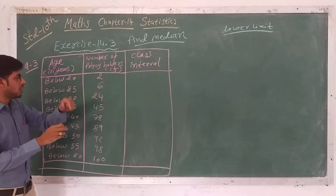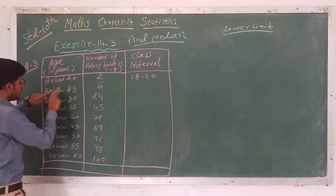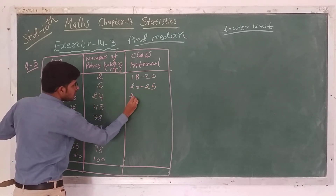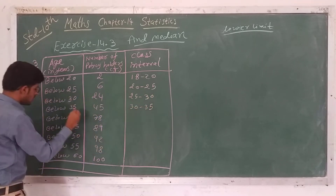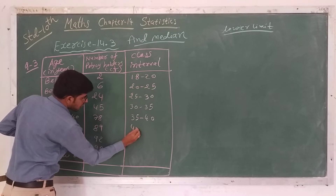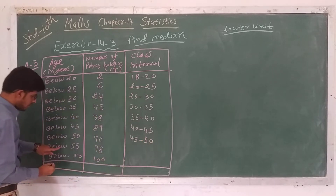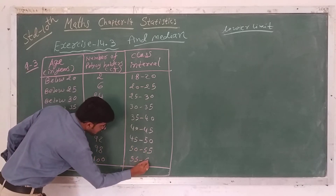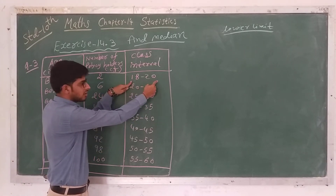In the question, below 20 means up to 18, so we can write 18 to 20. Next, below 25 means 20 to 25, below 30 means 25 to 30, below 35 means 30 to 35, below 40 means 35 to 40, below 45 means 40 to 45, below 50 means 45 to 50, below 55 means 50 to 55, and below 60 means 55 to 60.